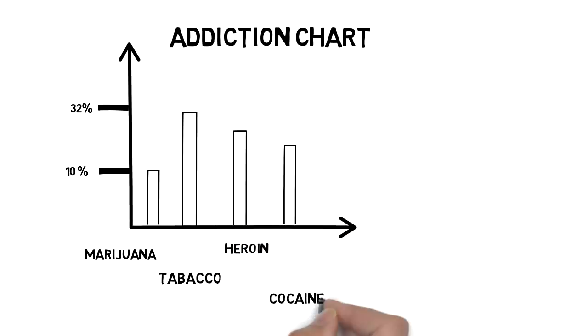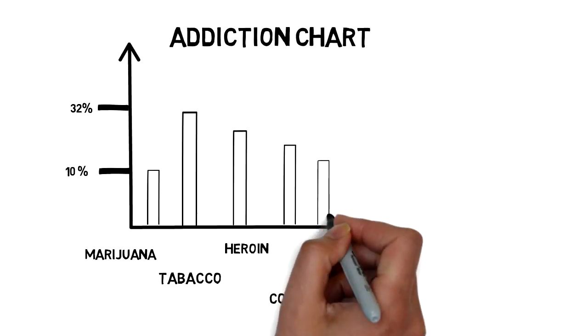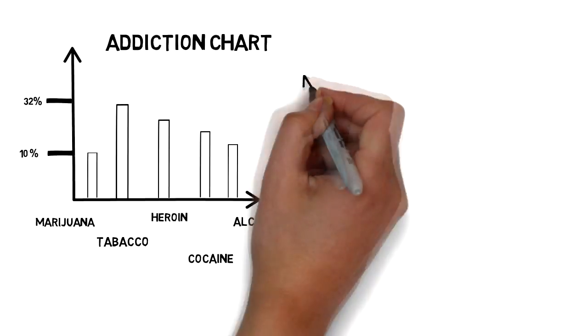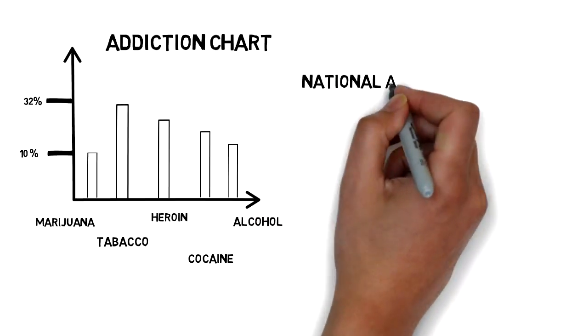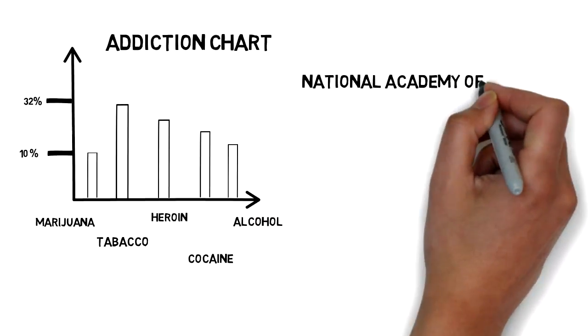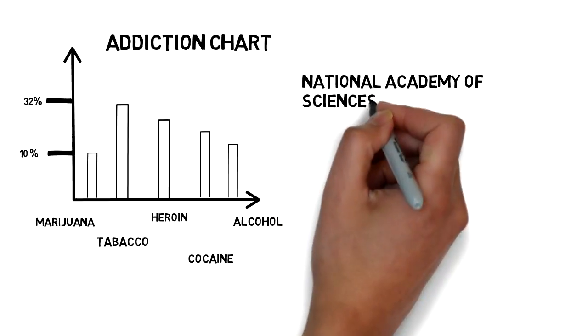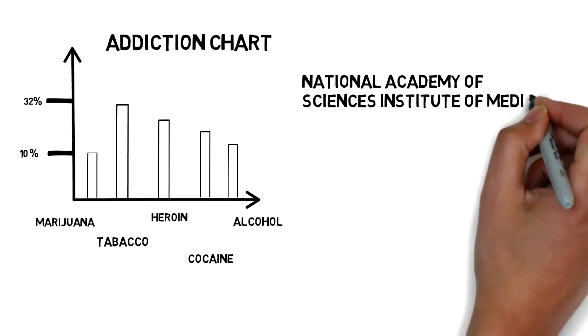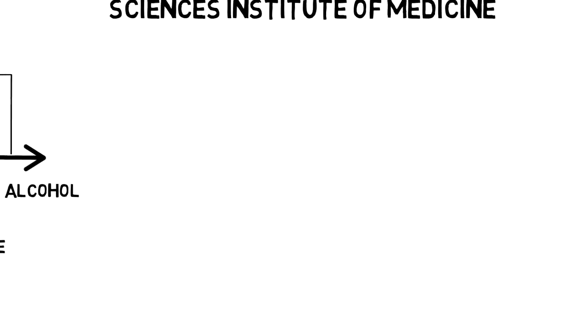To size that up with other legal and non-legal drugs, marijuana finds itself at the bottom of the chart of addictiveness. To make this point even clearer, the non-partisan National Academy of Science Institute of Medicine released a multi-year, million-dollar federal study assessing marijuana and health in 1999.